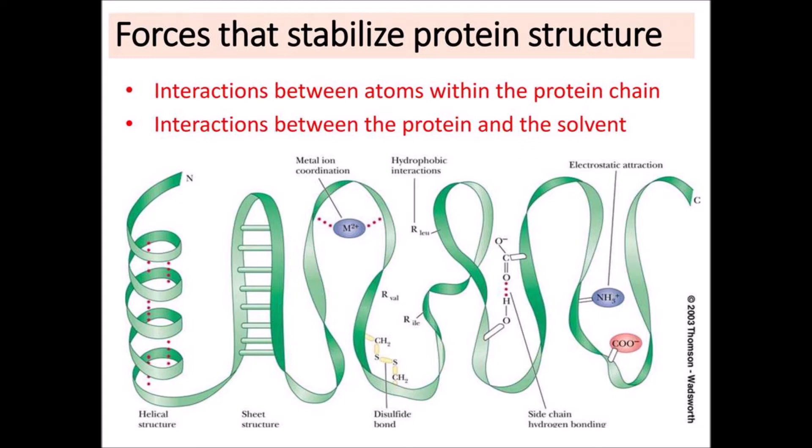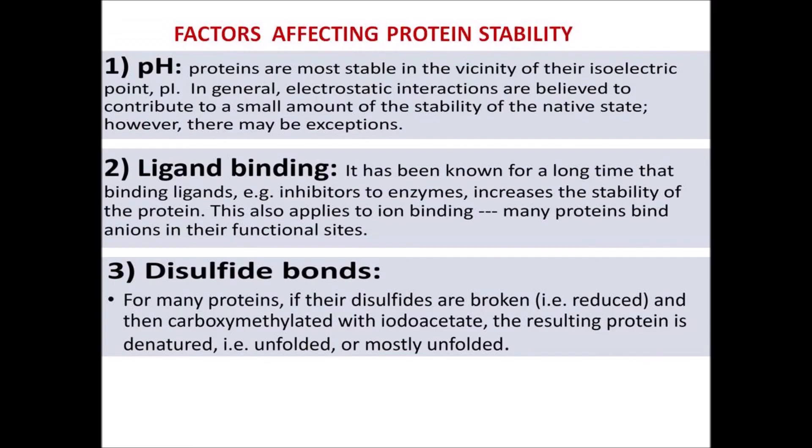The factors affecting protein stability include pH. Proteins are more stable in the vicinity of their isoelectric point. In general, electrostatic interactions are believed to contribute a small amount to the stability of the native state, however there may be exceptions.